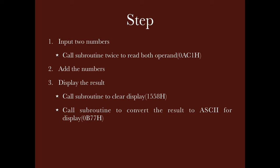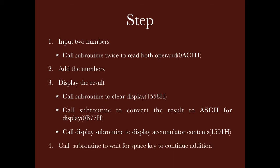We will call the subroutine at 0B77H for ASCII conversion. Then we call the display subroutine, which displays the accumulator content — that subroutine is written at 1591H. At the end, the last subroutine is called to get information about the key press, which is the fourth step. These subroutines discussed here are all built into the trainer kit for our convenience.